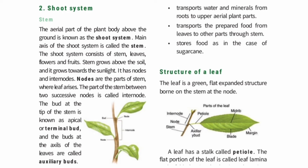Leaves are the food factories of the plant — that is where food is prepared. The stem also stores food and transports water and food throughout the plant. For example, you can taste sugar cane — the stem stores food in the form of sugar.